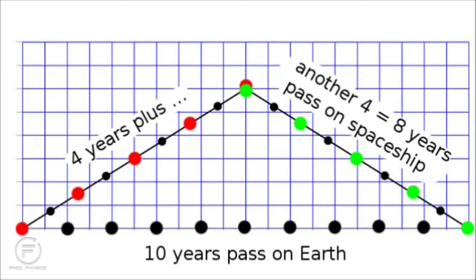Now she jumps from the red frame to the incoming green frame, follows a green line of constant position back to Earth, and each time she crosses a green constant timeline she experiences another half year of aging. Here's the complete journey in Earth twin's frame, with black dots indicating half-year intervals as experienced by space twin. She experiences a trip lasting eight years — four out and four back — while to Earth twin the trip lasts ten years — five out and five back. So he'll be ten years old while his twin sister is only eight years old.